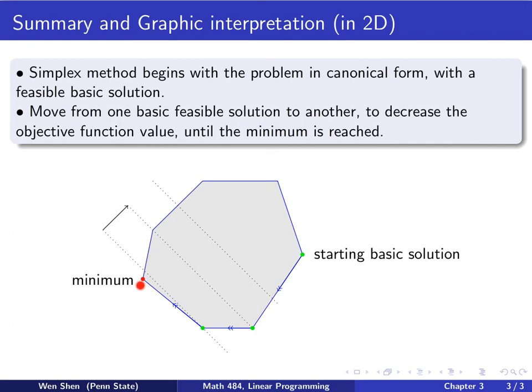Then, that means if you shall try to move to the neighboring ones, the z value would increase, which is indicated here. So you stop, and this becomes your minimum point.